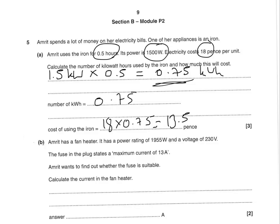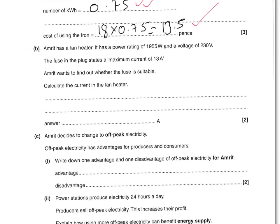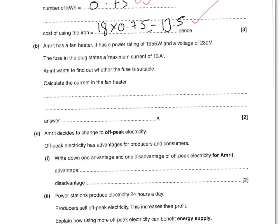Amrit has a fan heater with a power rating of 1,955 watts and a voltage of 230 volts. The fuse in the plug states a maximum current of 13 amps. Amrit wants to find whether the fuse is suitable — calculate the current in the fan heater. To work out current, you do power divided by voltage: 1,955 divided by 230 equals 8.5 amps.